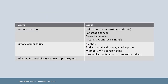Regarding etiologies: duct obstruction from gallstones is more common in females; alcohol causes primary acinar injury and is more common in males. Alcohol can directly damage acini, cause contraction of the sphincter of Oddi, or cause pancreatic fluid to clog within ducts. Pancreatic cancer can obstruct ducts. Ascaris is important in developing countries. Infections include choledochocysts, mumps, CMV. Scorpion sting is also important for board questions.